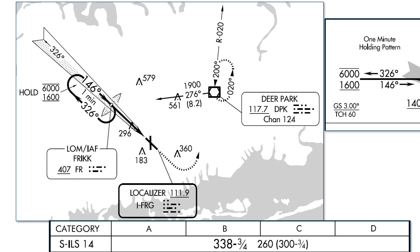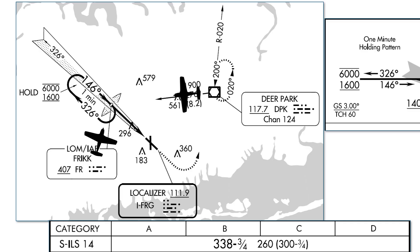There are sometimes multiple IAFs, but here there's only one. We can be approaching Frick, the Initial Approach Fix, from any direction, especially if we're navigating by GPS. We could also be approaching from the Deerpark VOR on what's called a feeder route — that 276 course from the VOR to Frick. The racetrack pattern at Frick is called a hold-in-lieu of procedure turn. It's a course reversal that'll allow us to get turned around and at the proper altitude prior to starting down on final approach.